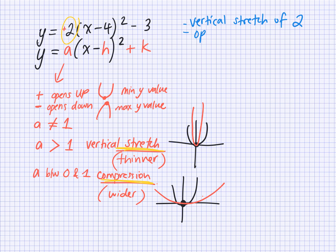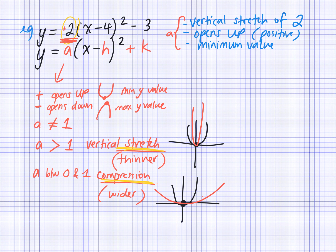How does it open — up or down? It opens up. So it's positive, and it has a minimum value. This is everything that A tells us. Now we're going to look at the H value and the K value.